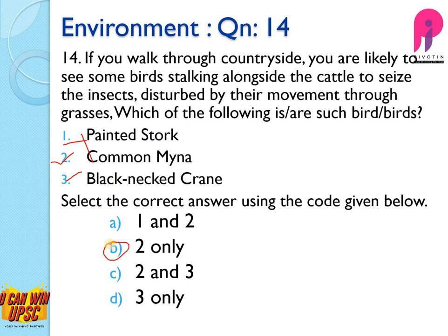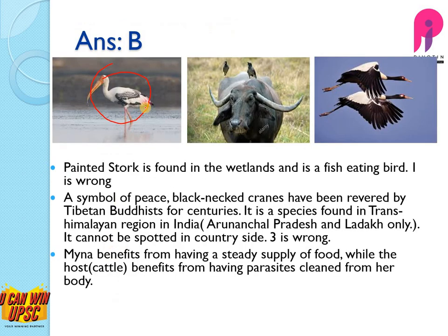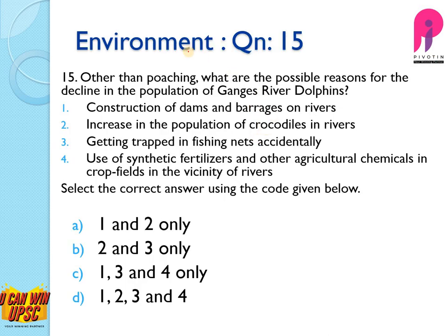We may think the common myna is disturbing the cattle, but no — the myna is actually eating insects and parasites, cleaning the body of the cattle. And how does it benefit the myna? It gets a steady supply of food from the cattle. This is a symbiotic relationship. Question 15: Other than poaching, what are the possible reasons for the decline in the population of Gangetic river dolphins?